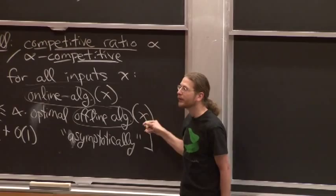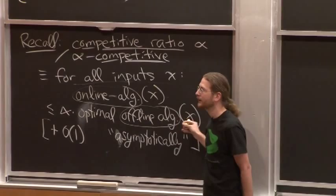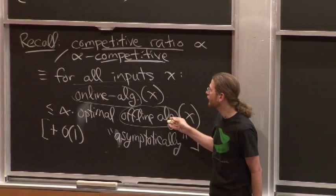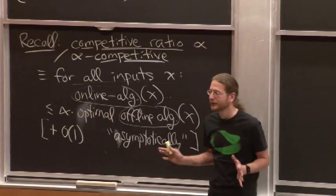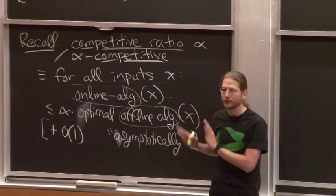This is very powerful — it's like perfect hindsight. We want to do within a constant factor, or some small factor, of the best possible if we knew the future. Sometimes you add an additive constant, and then it's called asymptotic competitiveness.